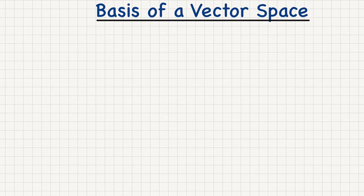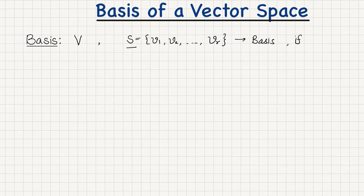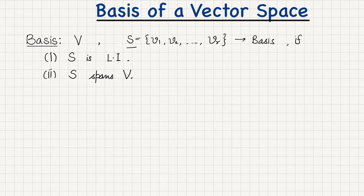In this lecture we will discuss the basis of a vector space, which is a very important concept. Suppose we have a vector space V and a set of vectors S having elements v1, v2, and so on in V. We say that this set S is a basis if it satisfies two conditions: first, the set S must be linearly independent; second, the set S spans the whole vector space V.